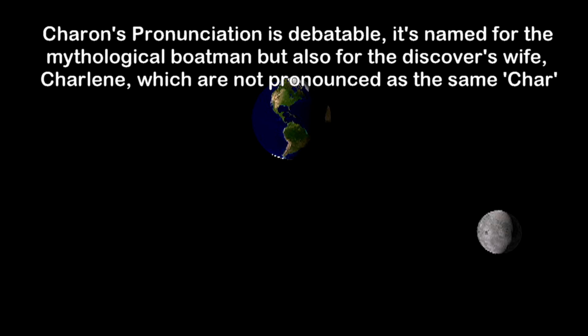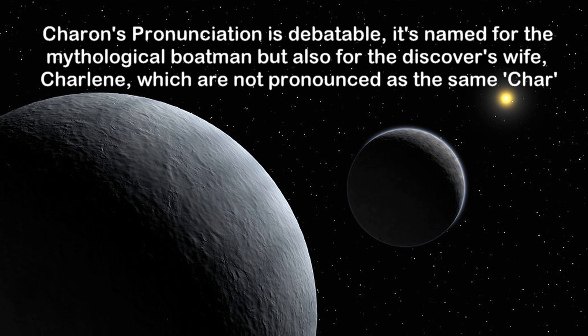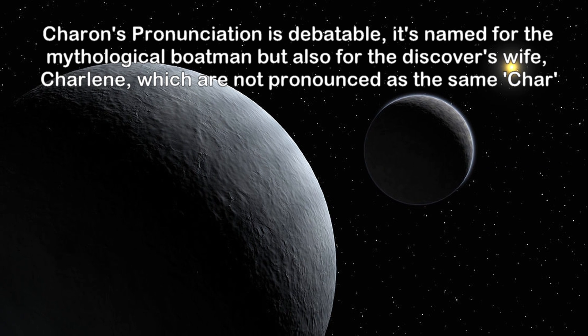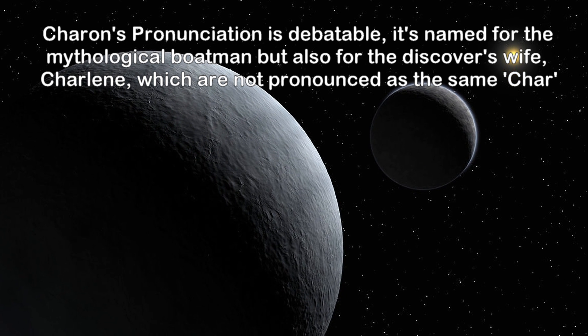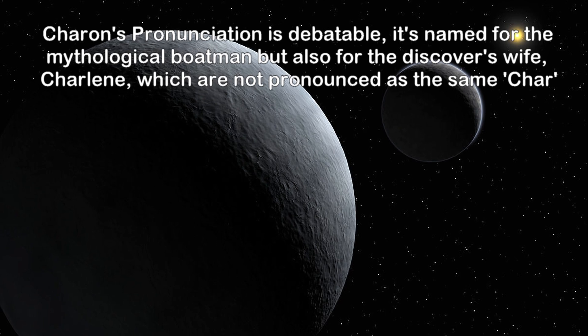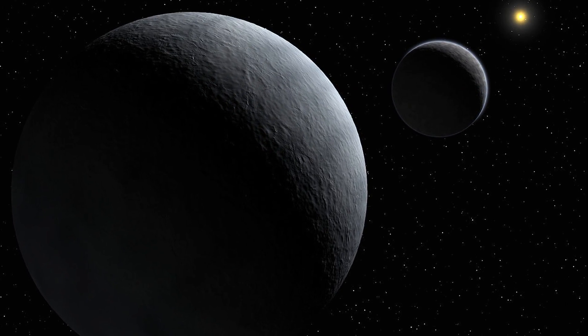Pluto and Charon are the closest to being double planets and will actually be my own cutoff point. Charon is about an eighth of Pluto's mass, not the 80th the Moon is to Earth. Some would argue having the very center of the two-body system outside of a larger planet is the proper definition, which is not true for Earth and Moon but is true for Pluto and Charon. But that's also not my definition for today.